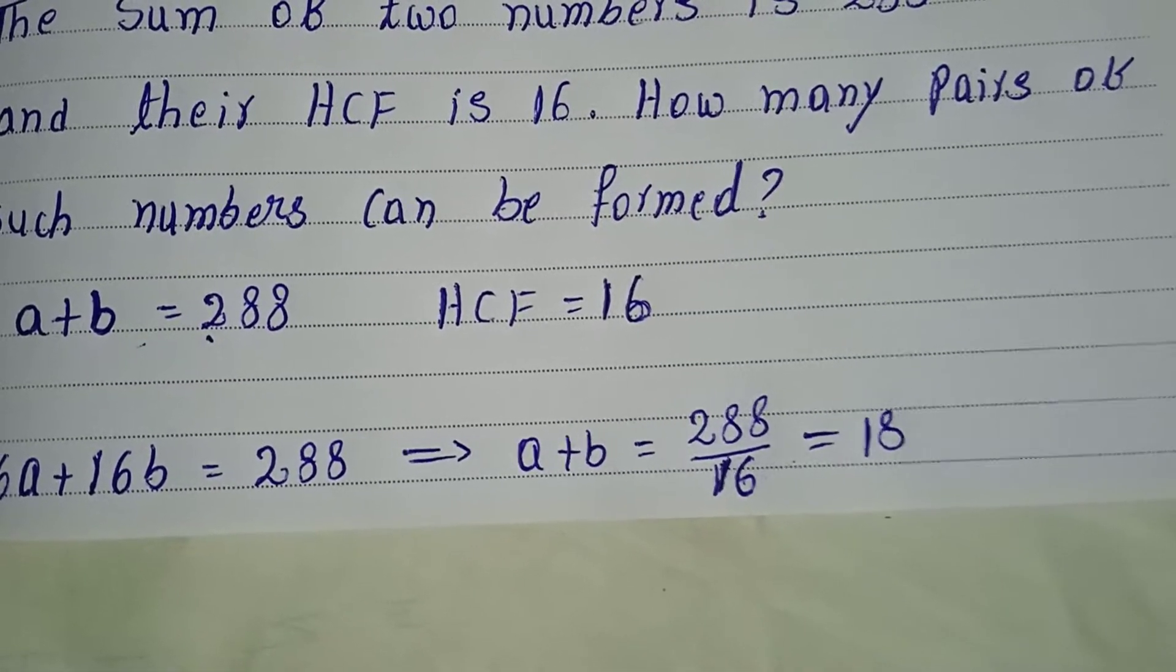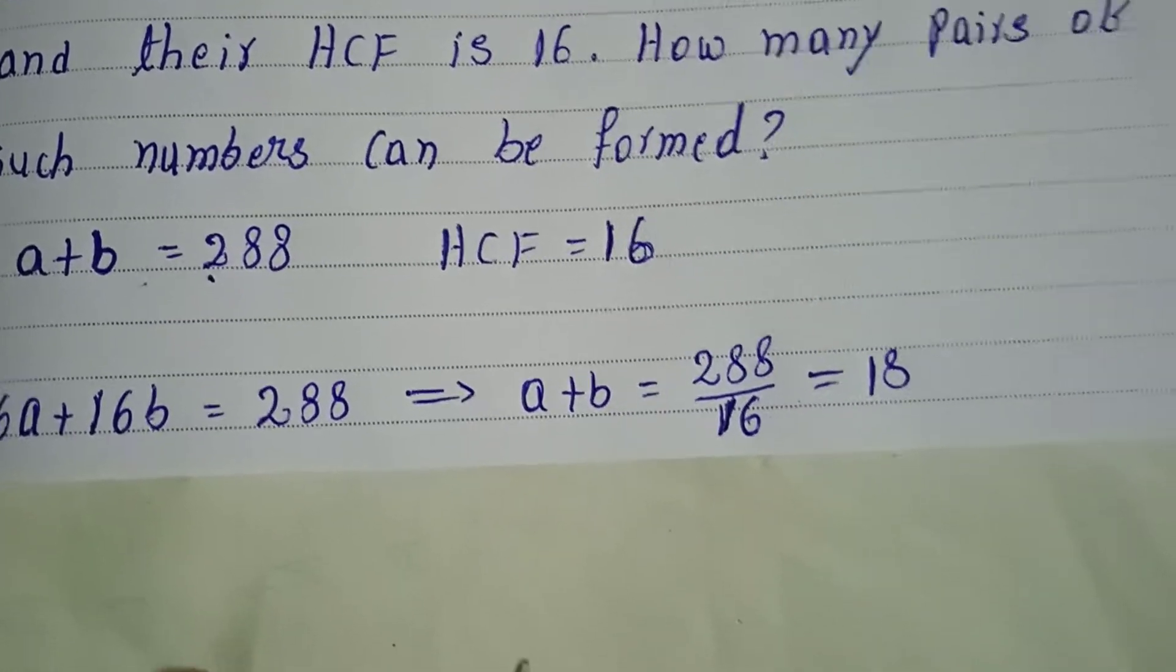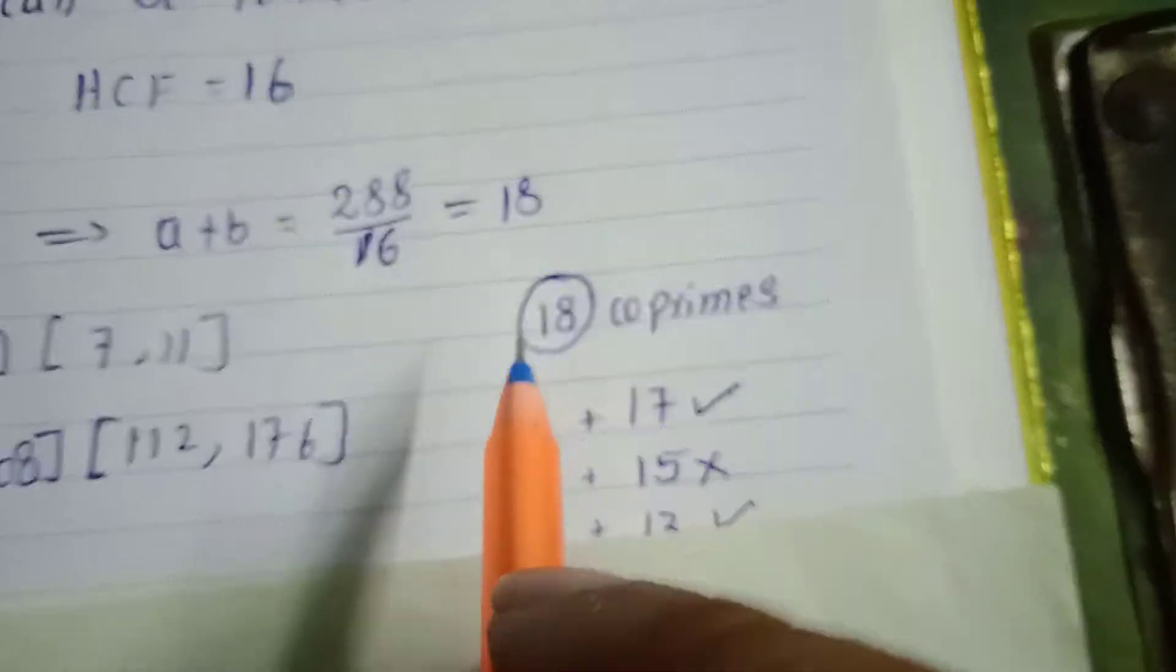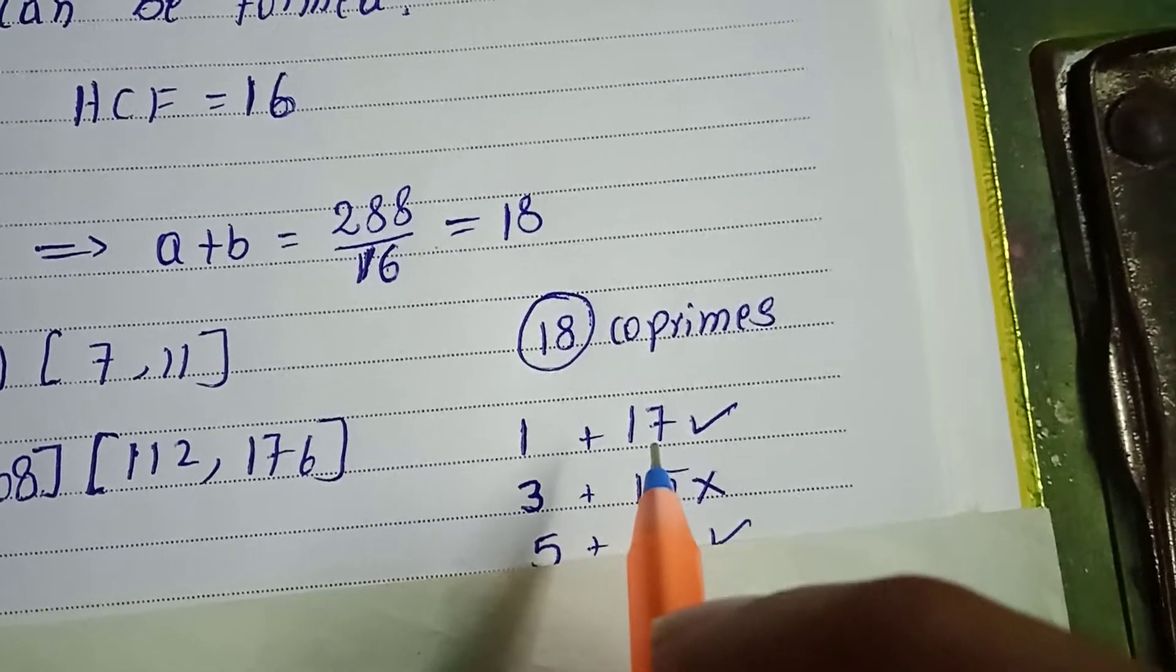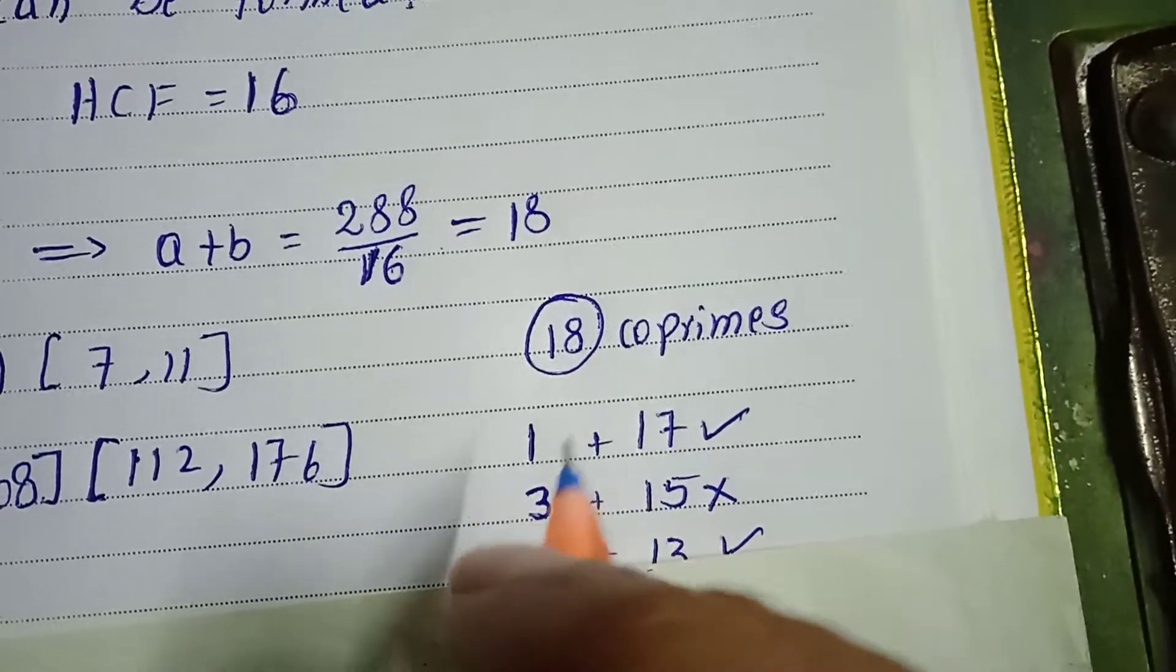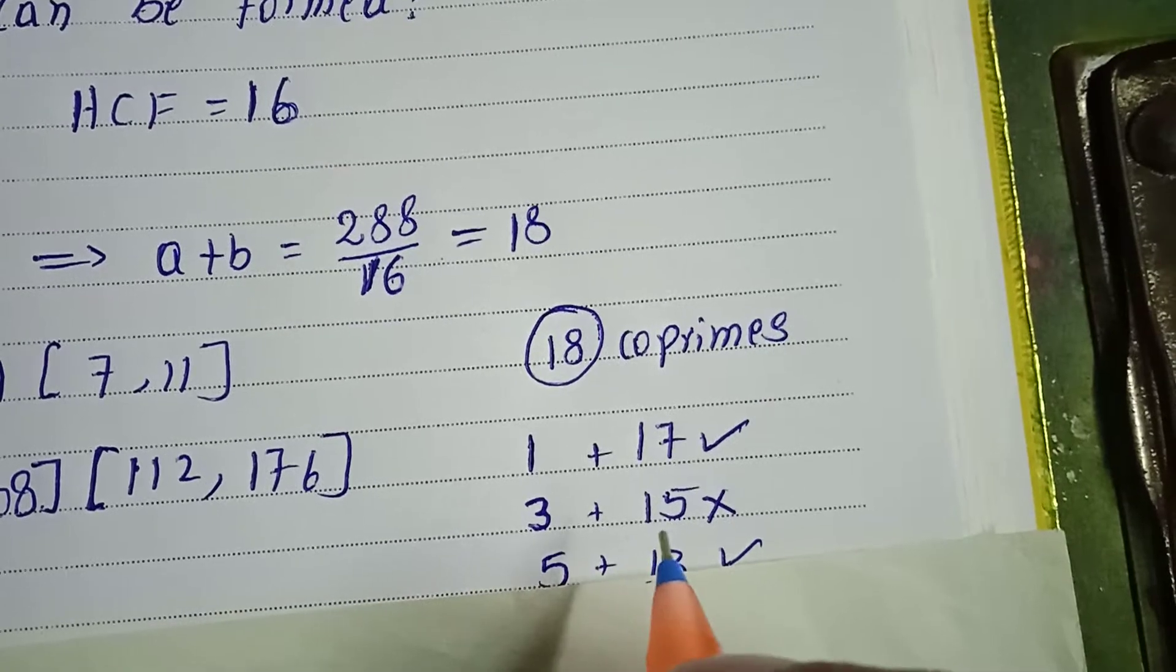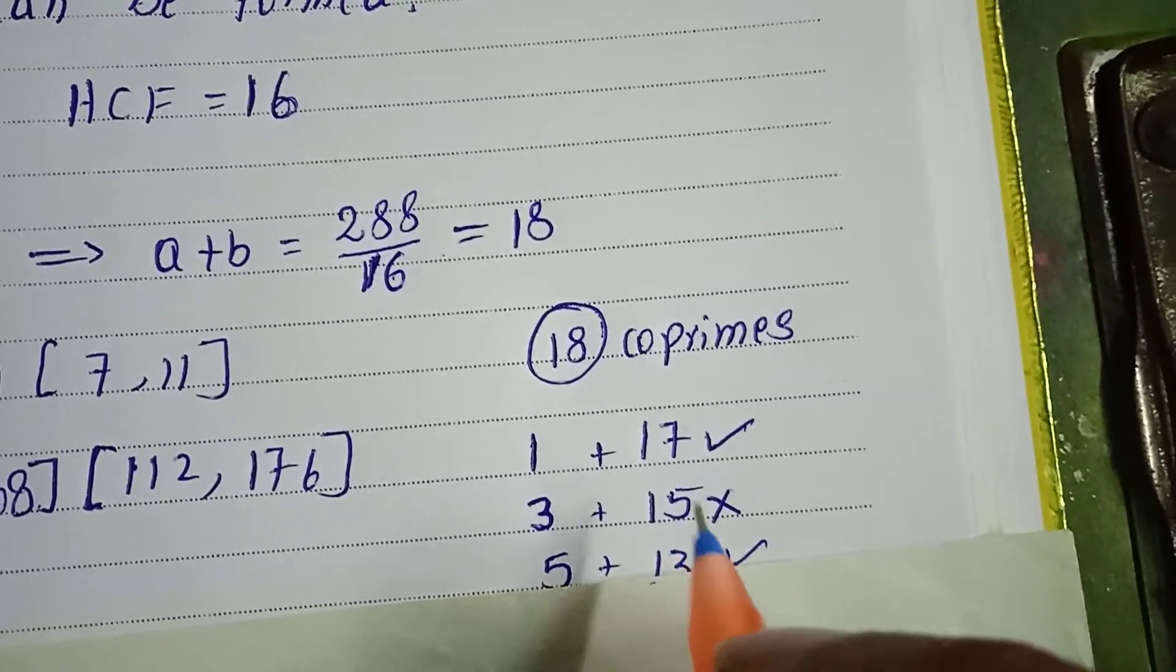1 plus 17 is 18, and both are co-prime. Next, 3 and 15 gives 18, but 15 is not prime, so this pair doesn't work. Next number, we take 5 and 13, which are both prime.